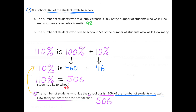C. The number of students who ride the school bus is 110% of the number of students who walk. How many students ride the school bus? 110% is 100% plus 10%. 100% of 460 is 460, and 10% of 460 is 46. So 460 plus 46 equals 506. The number of students who ride the school bus is 506.